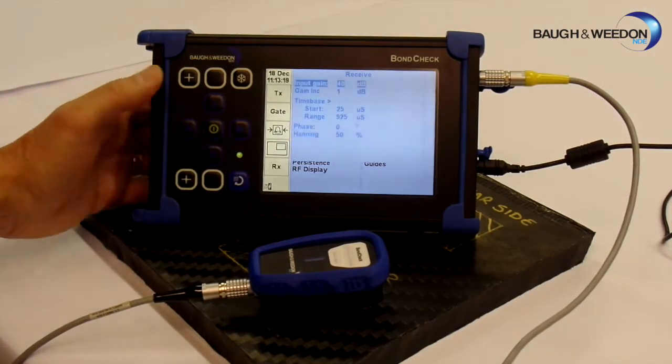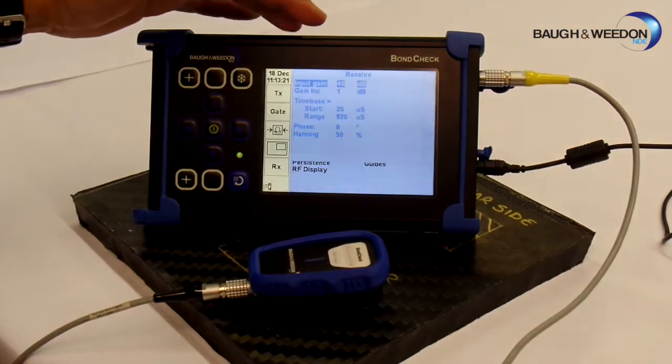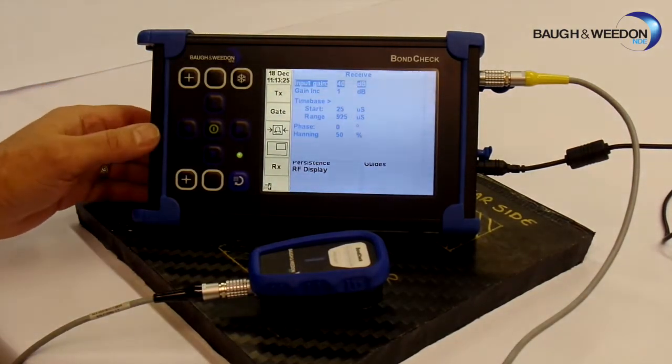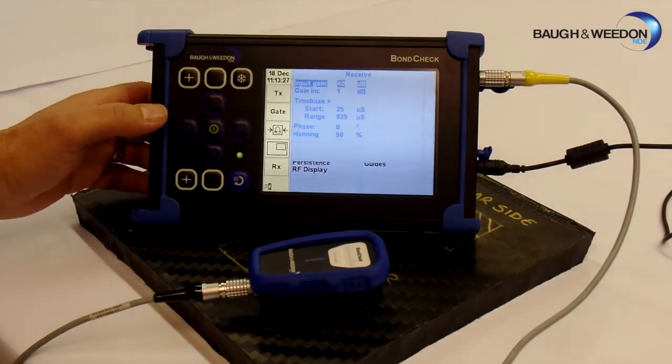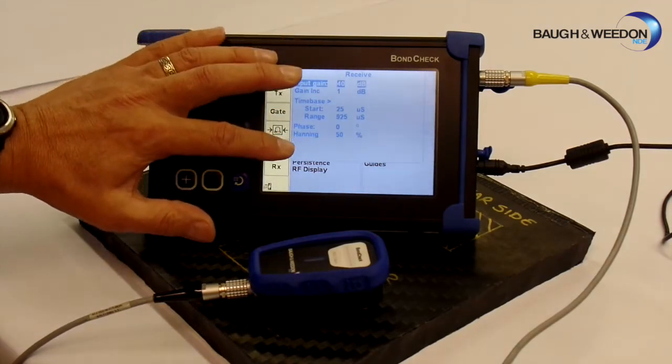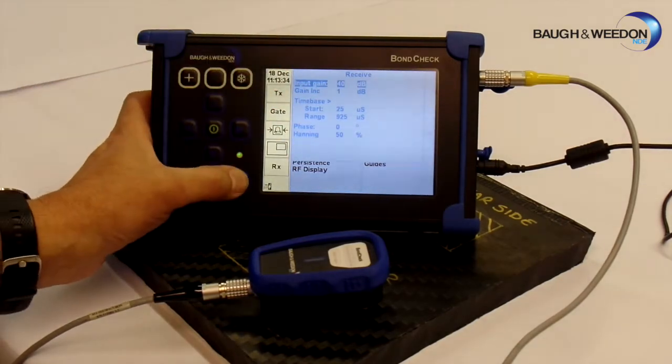Now go down to receiver. Gain is around about 40 dB, that is nice and in the middle of the input gain area, so we should be happy with that. Everything else seems okay, just having a little look. Look down to there.